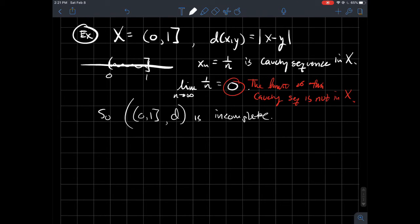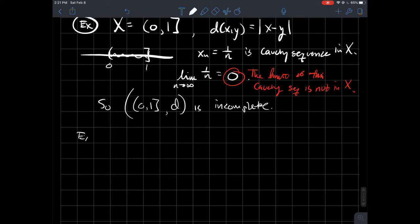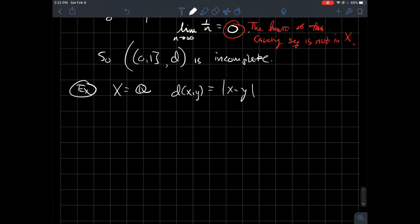So can you exhibit a Cauchy sequence that converges but its limit does not live in the set? Another incomplete metric space would be X equals the rational numbers. We'll keep our usual distance function—the distance between two rational numbers, just how far they are on a number line.